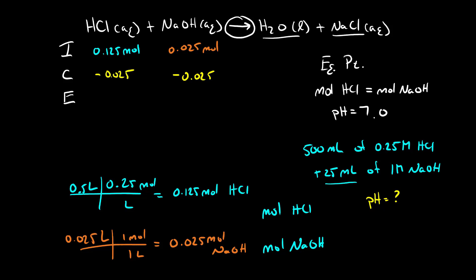Sodium hydroxide here is your limiting reactant and after we've reached the end of this we have 0.1 mole of hydrochloric acid left over and we have zero moles of sodium hydroxide left over. So after this neutralization reaction has occurred I have 0.1 moles of hydrochloric acid.